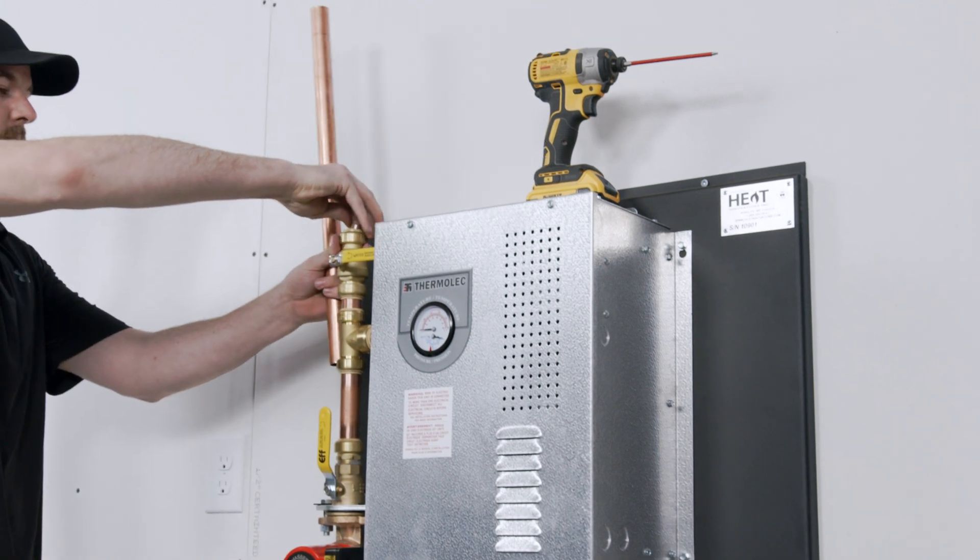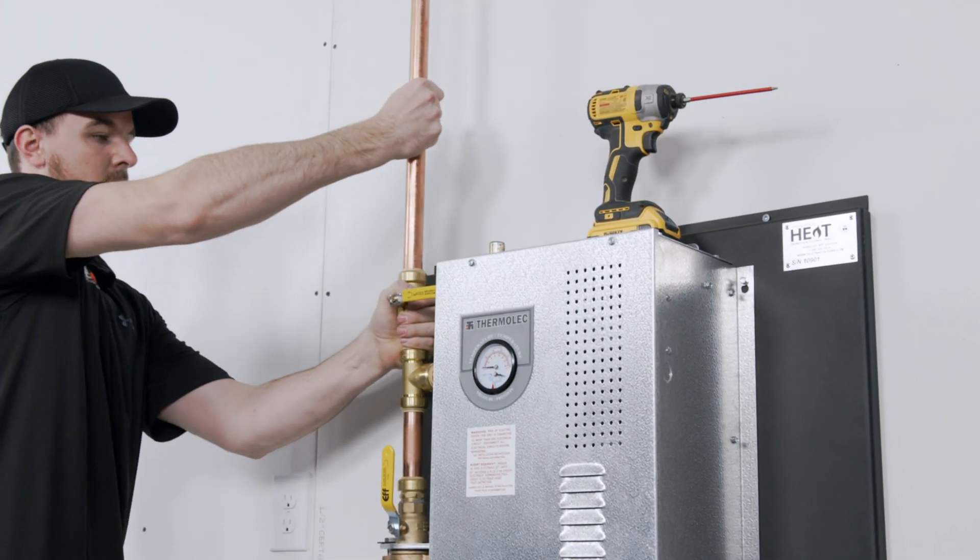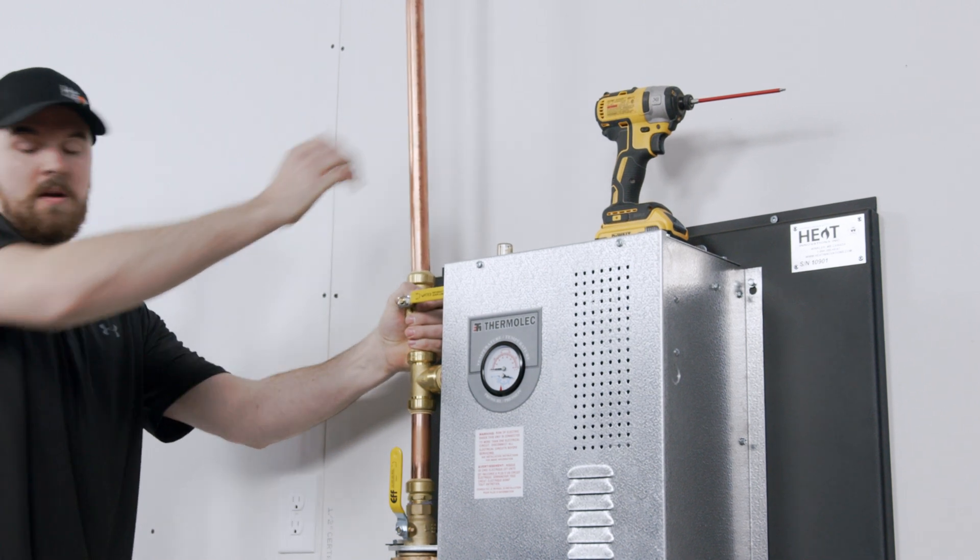Install the copper length provided into the top fitting of the boiler system. Three feet is the suggested length, but this may be cut down if required.